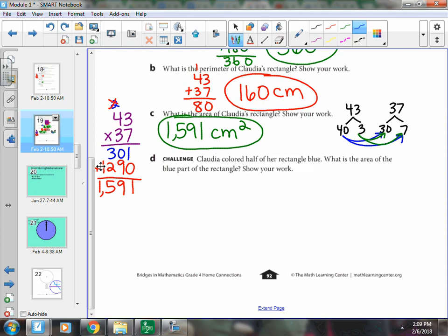Okay, 40 times 30 would be 4 times 3, which is 12. Add two zeros. 40 times 7, 4 times 7 is 28, plus 1 zero. 3 times 30 would be 90.